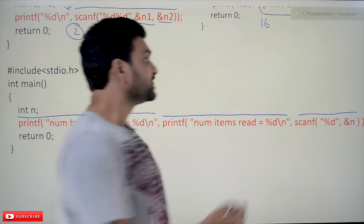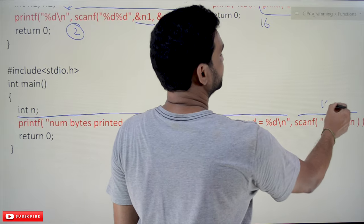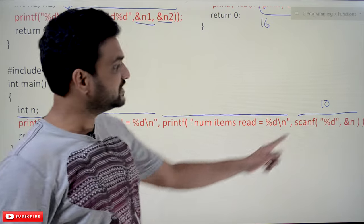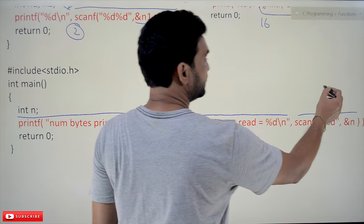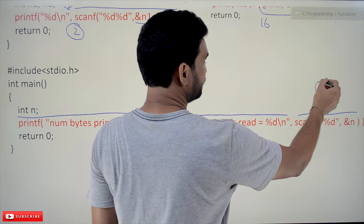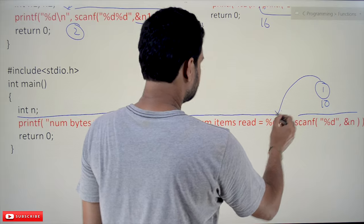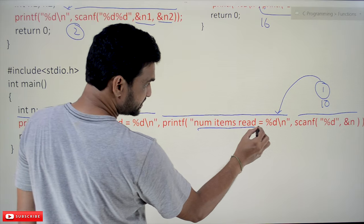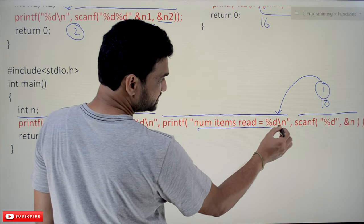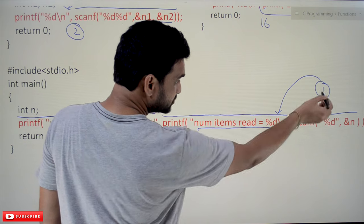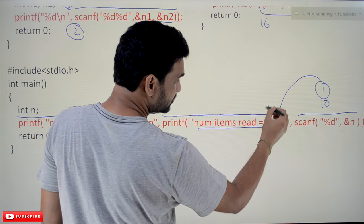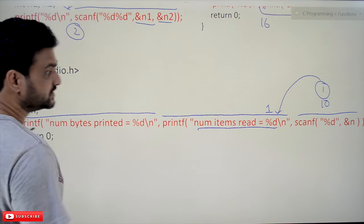For example, if we have given 10, so how many values it has scanned? One value. So that one value is the return value of this, so one will return to this here. Number of items read percentage d slash new line, so in this percentage d it is going to put one.